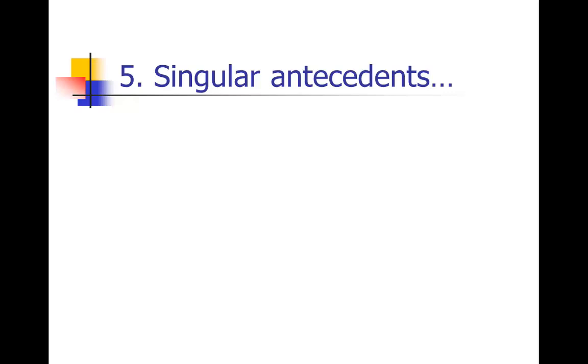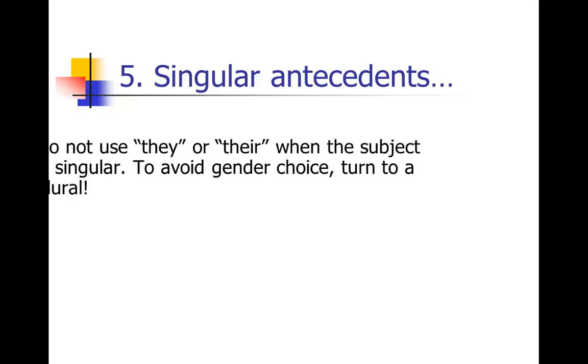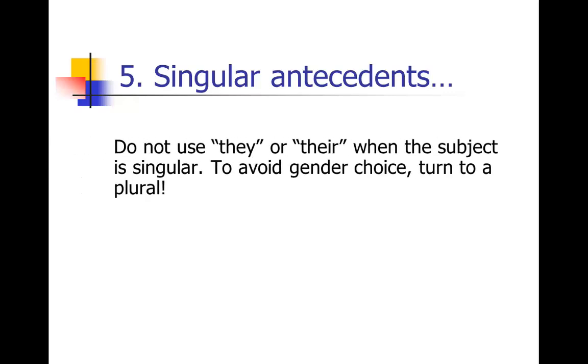One last one to pay attention for that people often get wrong is you don't want to use they or their when the subject of your sentence is singular. Make sure you have agreement there. This one's tricky, and the reason people put in they or their is that to keep it in the singular, you often have to make a gender choice, and that's problematic. Do I say his or do I say her?